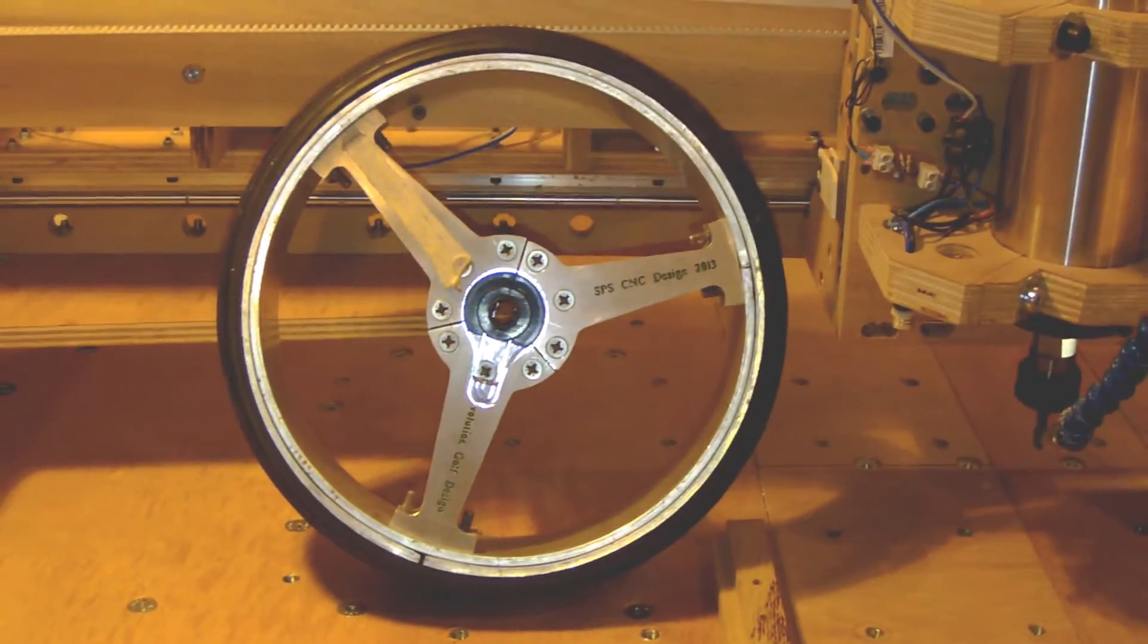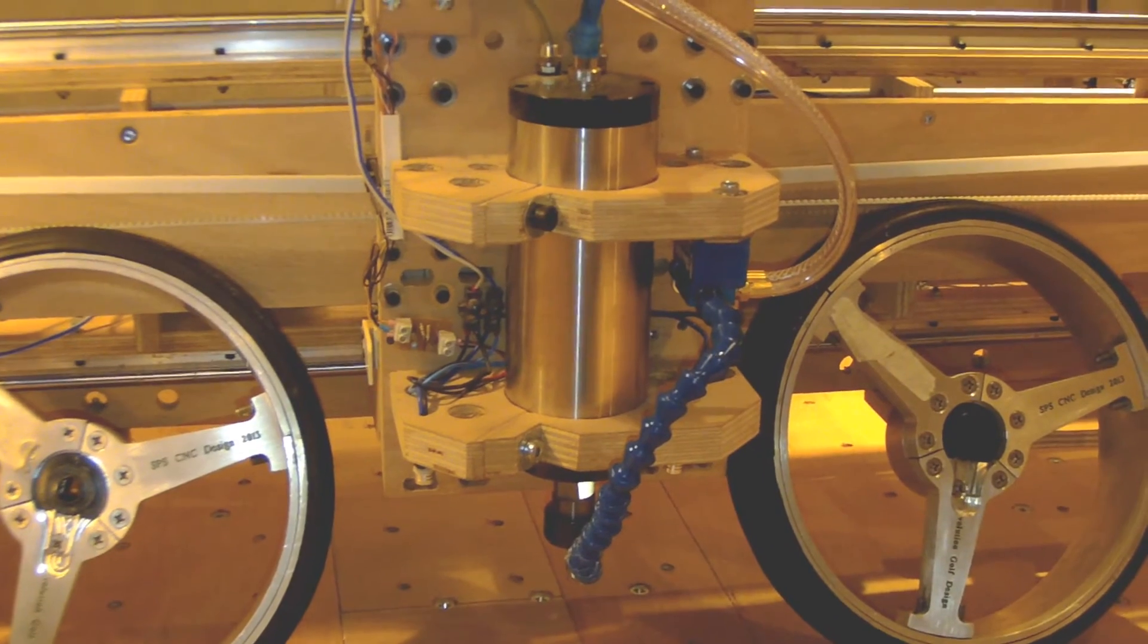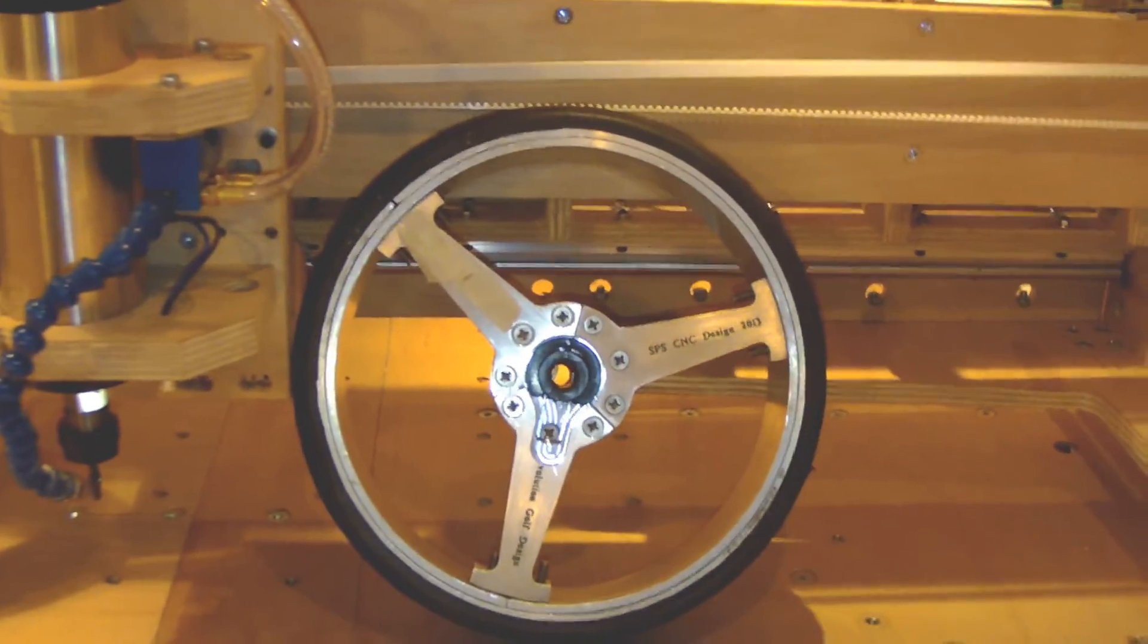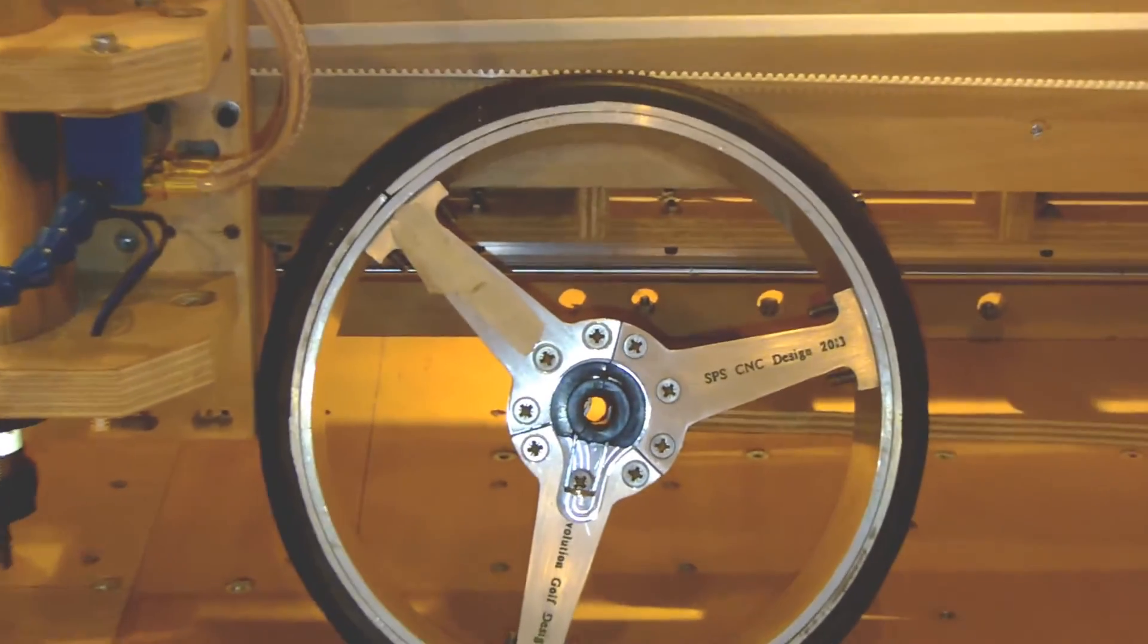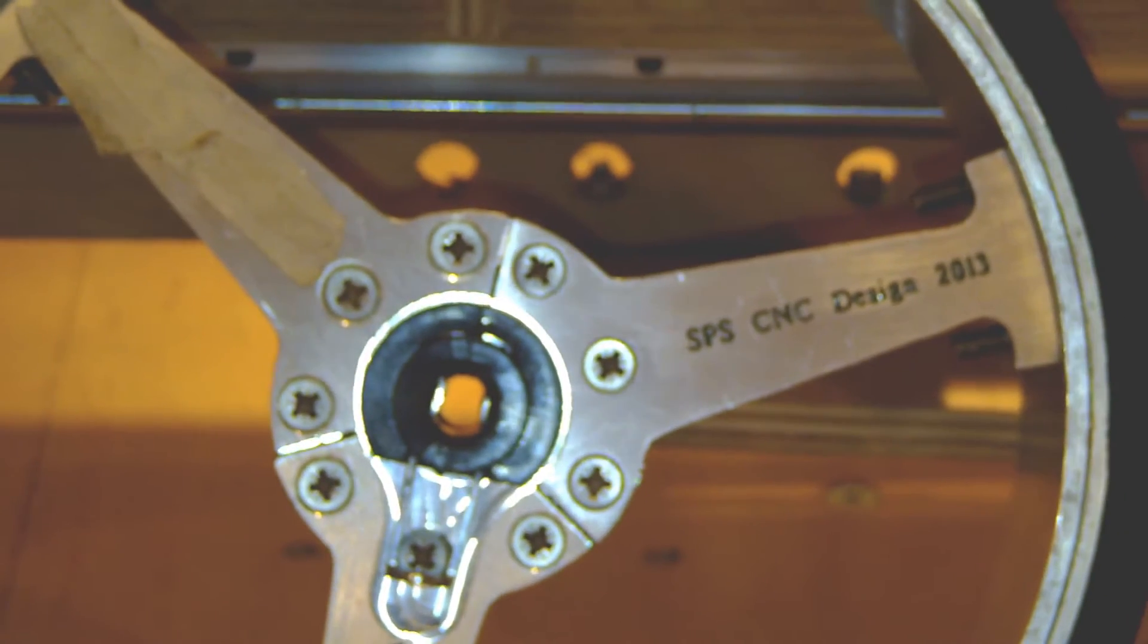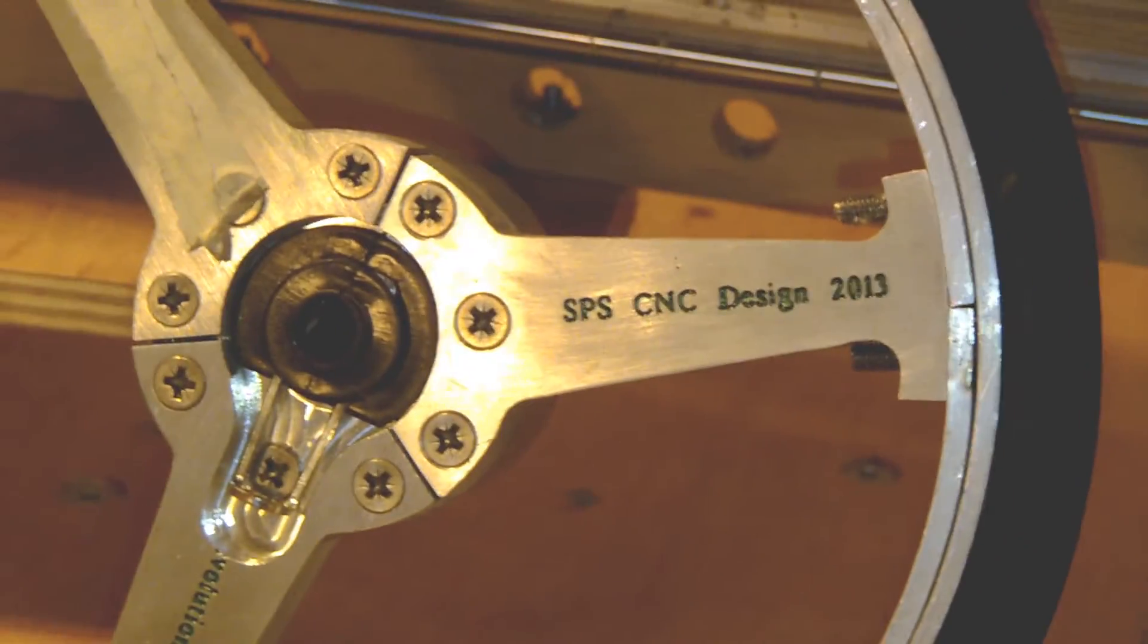So this is the first wheel made with the CNC machine. You can see the milling here, and also the second wheel with the tire already finished and the engraving made with the CNC. We have the same thing on both.